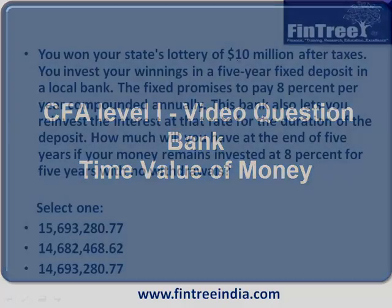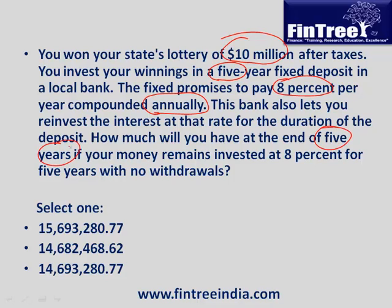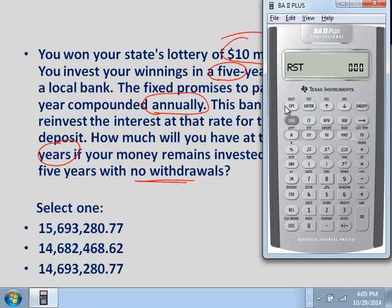You won your state's lottery of $10 million after taxes. You invest your winnings in a five-year fixed deposit in a local bank. It promises to pay you 8% per year compounded annually. This bank also lets you reinvest interest at that rate for the duration of the deposit. How much will you have at the end of five years if your money remains invested at 8% with no withdrawals?